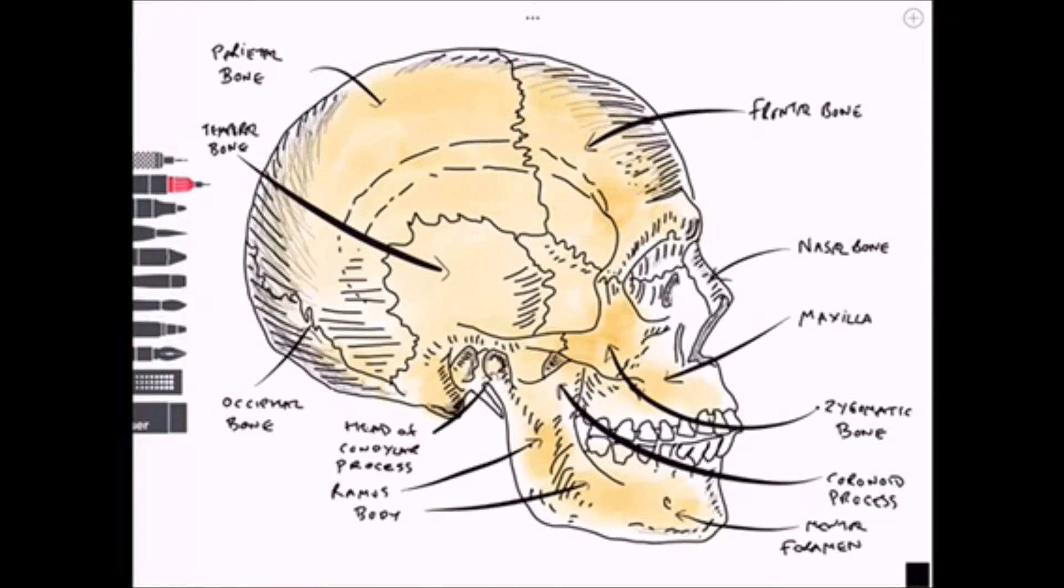Superiorly we need to label a suture. This suture is known as the coronal suture. Sutures are immovable fibrous joints.